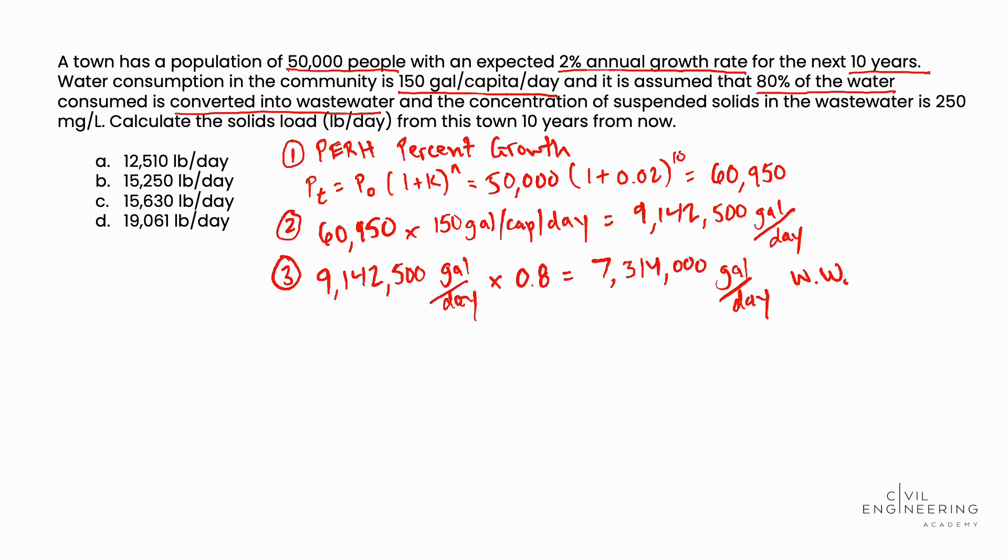Then in step 4, we're going to use the PE reference handbook again, and we're going to look up in the water quality section the water quality concentration to mass per day conversion equation. And that equation is M, the mass in pounds per day, is equal to C, the concentration in milligram per liter, times Q, the flow rate in MGD, that's million gallons per day, times the conversion factor of 8.34.